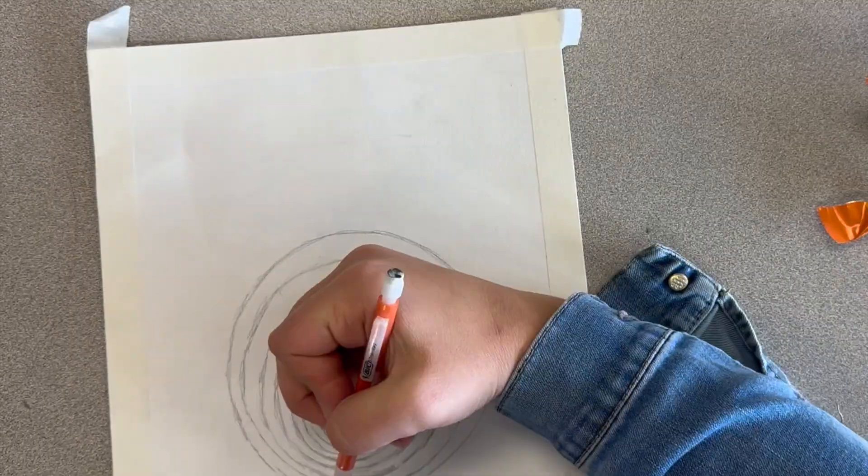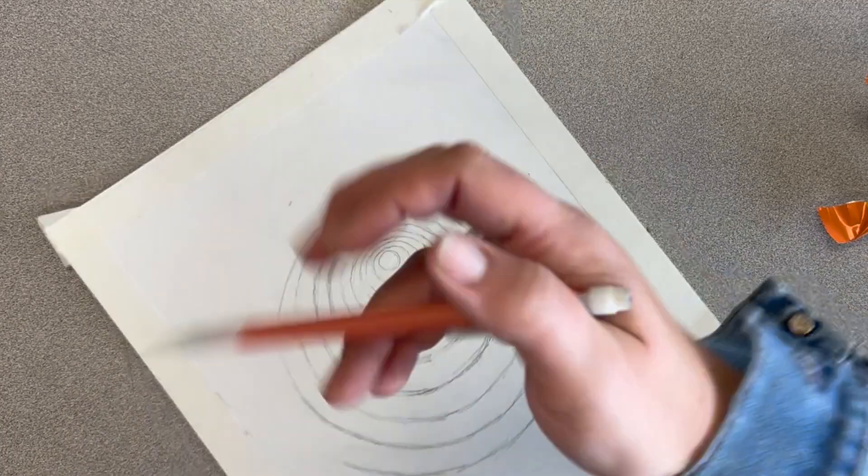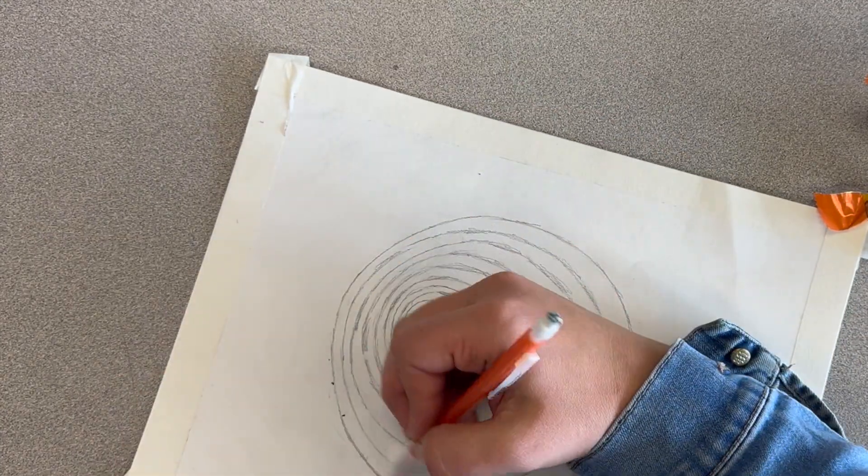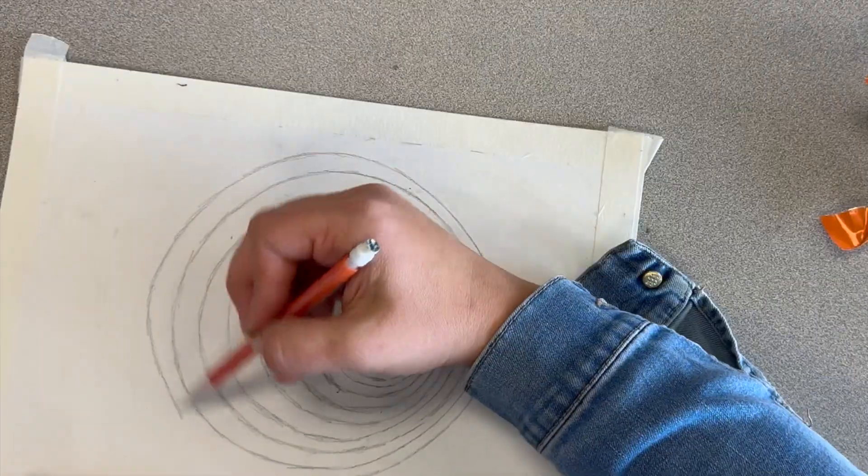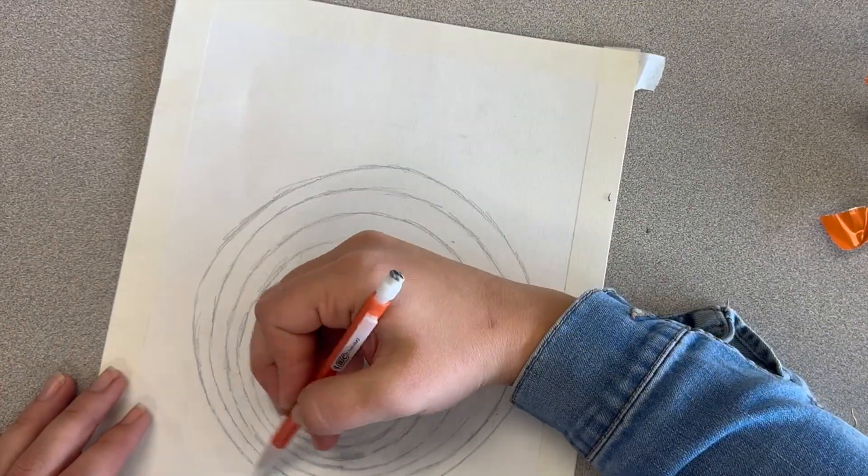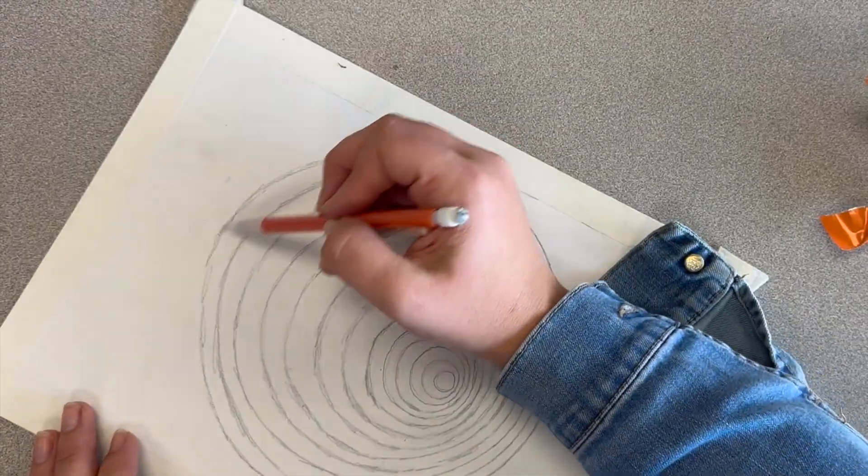It's really important with this version of your illusion that your circles do not touch your border. So after you repeat your circles a number of times, and you have a nice large circle on your paper, and it's getting close to your border, then you can stop drawing your circles and get your ruler out to draw your lines.